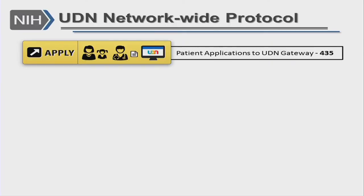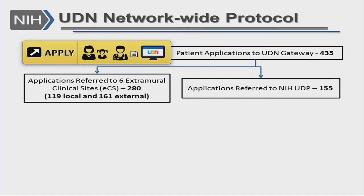For the UDN's network-wide protocol, all applicants apply to a central online application process housed at the coordinating center's website — our UDN gateway. All applications come into this gateway and are then routed to clinical sites using an algorithm, mostly to the site geographically closest to the patient. This was due to the fact that when we established the UDN, one of the main factors behind expanding to multiple sites was trying to make it easier for patients to access a center for undiagnosed evaluation. This gives a breakdown of applications seen at the extramural six clinical sites versus the NIH UDP, which has a higher quota as they were already seeing approximately 150 patients per year.